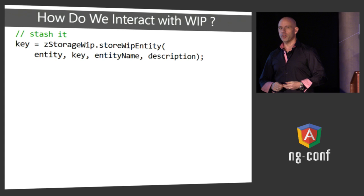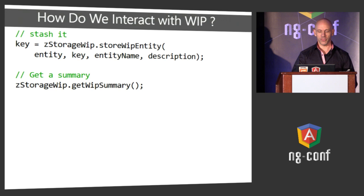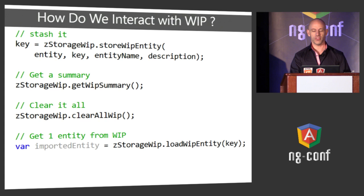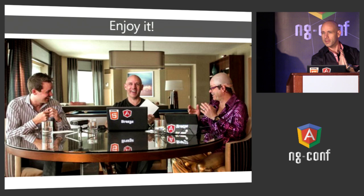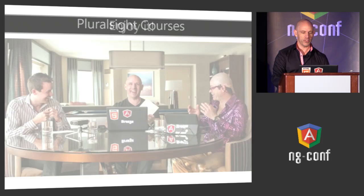Interacting with local storage in a modular Angular service style is important. There's a library called z-storage-wip that I wrote, available on GitHub — it gives you methods to stash, get a summary, and clear WIP. You can access it at the URL shown. In conclusion: find a good pair programming partner, have fun working with Breeze and Angular, and if you want to see more check out my course on Pluralsight or Joe Eames' course called Angular Fundamentals. Thanks for coming.